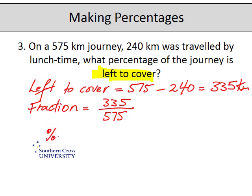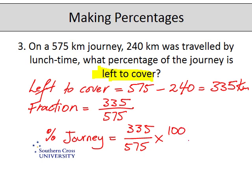So the fraction of the journey still to travel is 335 out of a total of 575. To make that a percentage: 335 divided by 575 times by 100 — which we definitely need a calculator for. That comes out at 58.26 something percent, rounded to two decimal places. You might also consider just one decimal place, in which case it would be 58.3.